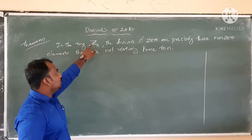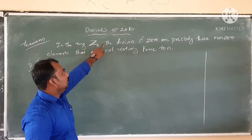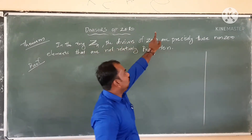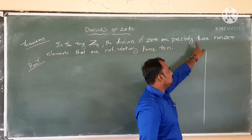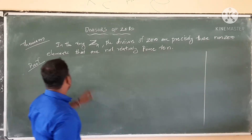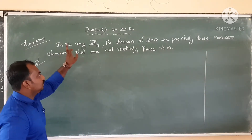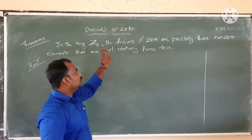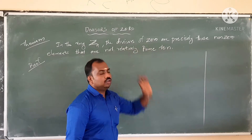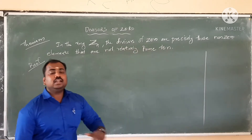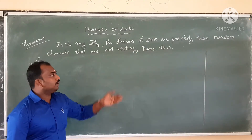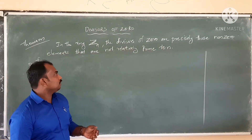In a ring Zn, the divisors of zero are precisely those non-zero elements that are not relatively prime. And Zn is a ring — that means zero divides all.